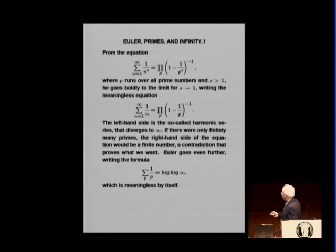And then he goes to the limit, however, for s going to one, and writes this equation. I say it's meaningless because the left hand side was very well known that diverges, and this sum is infinity. But Euler deduces then that if the number of primes, there were only finitely many primes, this will be a number. But this is infinity, so there have to be infinitely many primes.